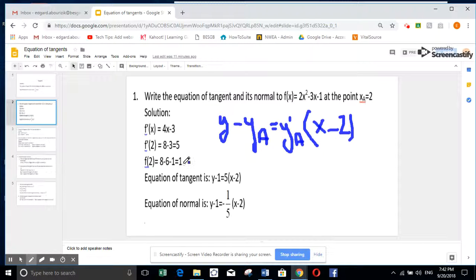We replace x by 2 in the equation. So 8 minus 6 minus 1, so it's 1. I replace it here. And to find y prime of a, I replace it in the derivative. So 8 minus 3 is 5. So I replace it here. So I have the equation of tangent.